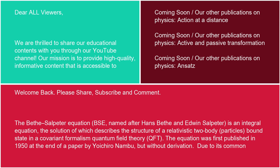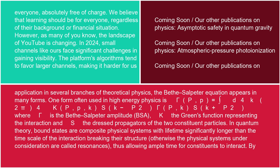The Bethe-Salpeter Equation, BSE, named after Hans Bethe and Edwin Salpeter, is an integral equation, the solution of which describes the structure of a relativistic two-body bound state in a covariant formalism Quantum Field Theory, QFT. The equation was first published in 1950 at the end of a paper by Yoichiro Nambu, but without derivation, due to its common application in several branches of theoretical physics. The Bethe-Salpeter Equation appears in many forms.